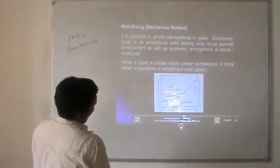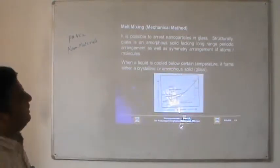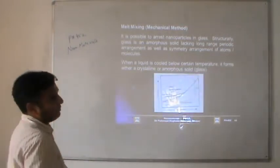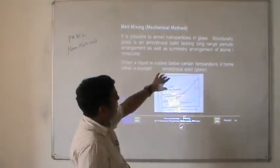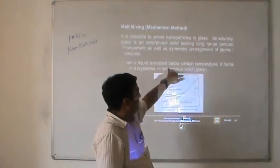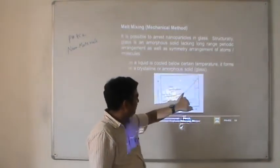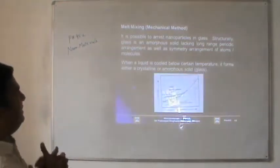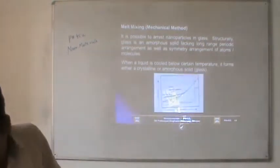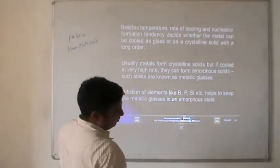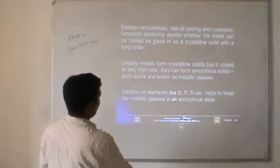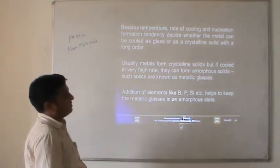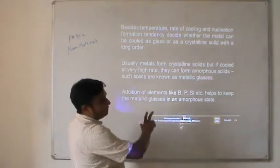The next method is melt mixing. It is a mechanical methodology and is the easiest one. It is possible to arrest nanoparticles in glass. Structurally, glass is an amorphous solid, lacking long-range periodic arrangement as well as symmetry of atoms or molecules. When a liquid is cooled below a certain temperature, it forms either a crystalline or amorphous solid. By arresting nanoparticles in glass medium or amorphous medium, you can produce nanosize in bulk.